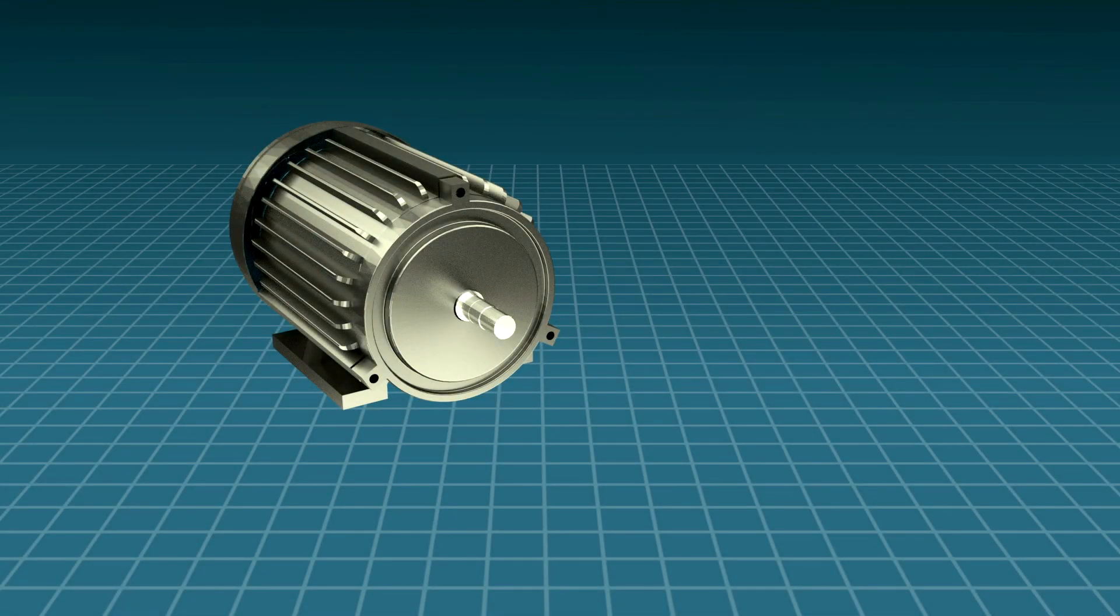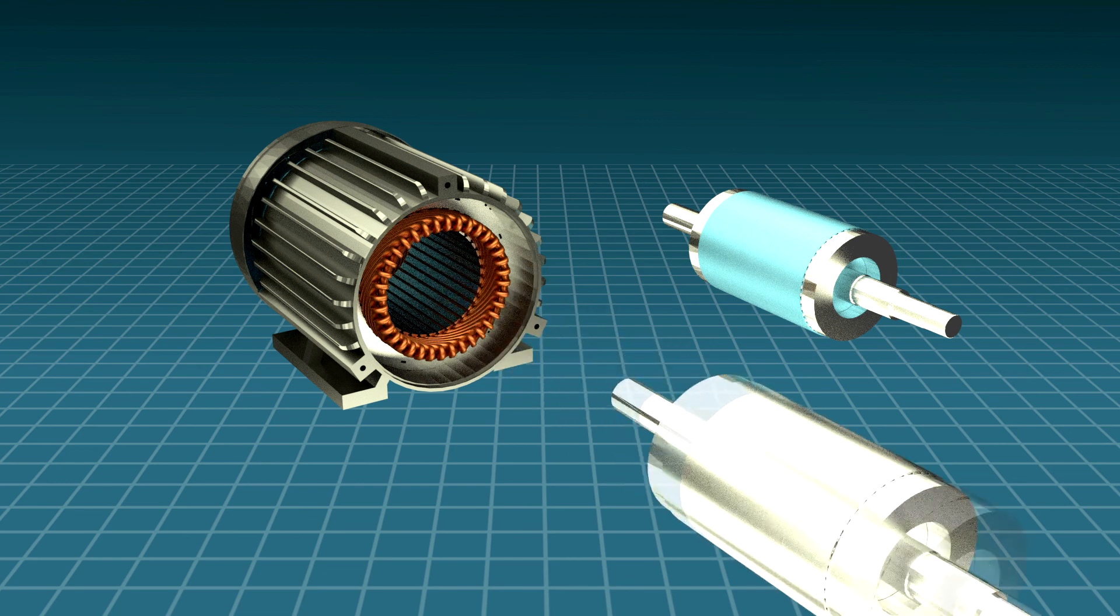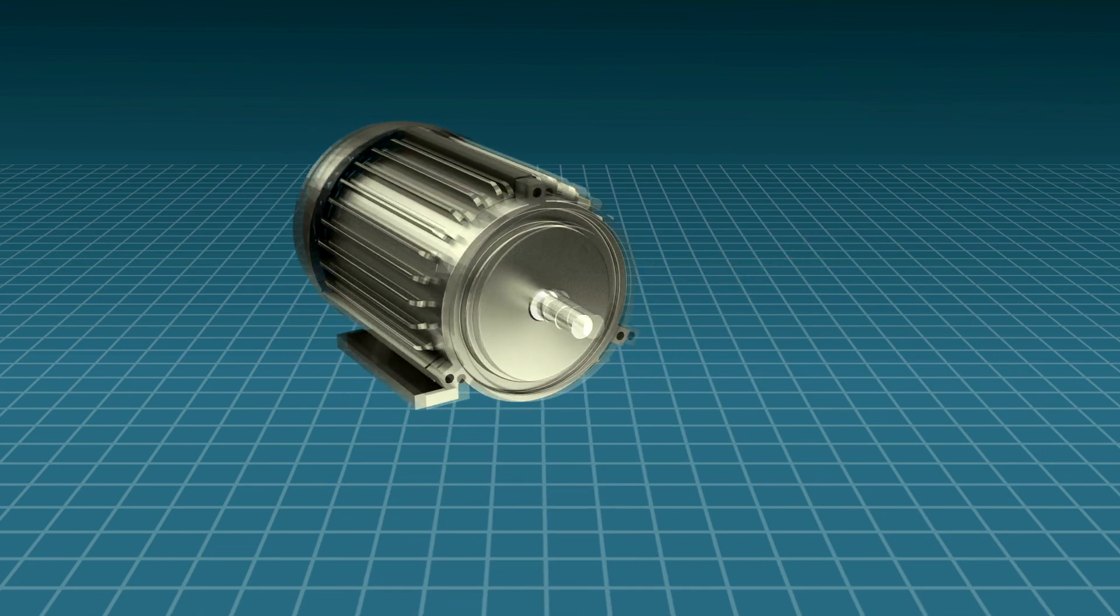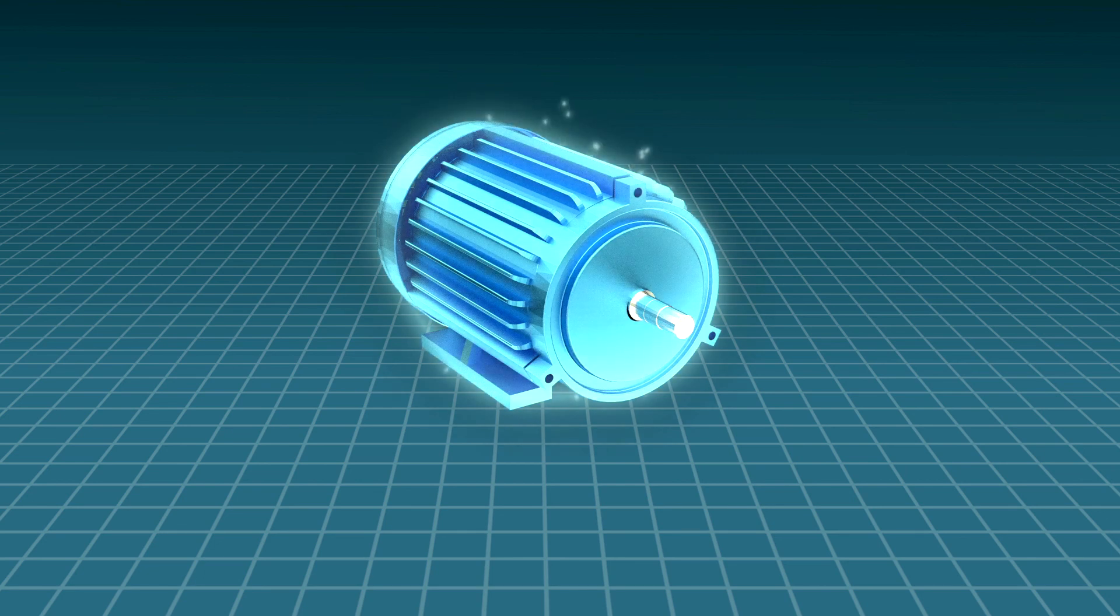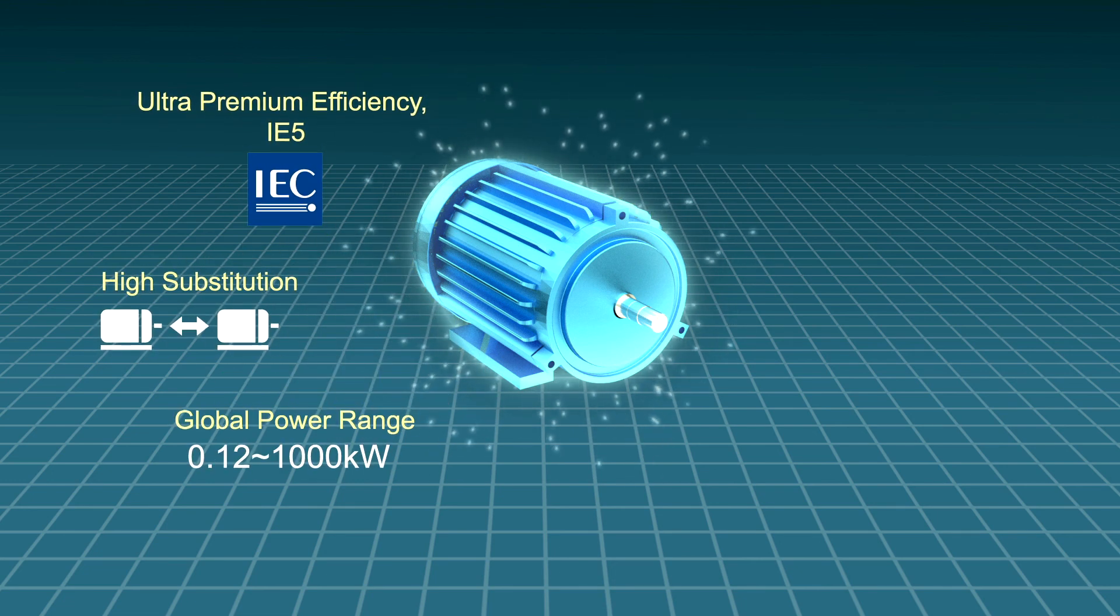Instead of changing an entire production line, RofSIM motors can be manufactured by replacing only the rotor mould, which not only saves cost but also allows easy replacement of traditional induction motors.